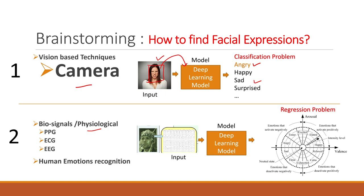A potential problem with camera-based techniques is that a person can fake expressions. For biosignal-based techniques, however, you cannot fake, because the body tells the biosensors what is going on inside. Signals such as EEG (brain-based), cardiac (heart-based), and respiratory signals can be used to detect emotions. Using brain signals, we can not only classify an emotion like anger, but also determine the intensity — which is a regression problem.